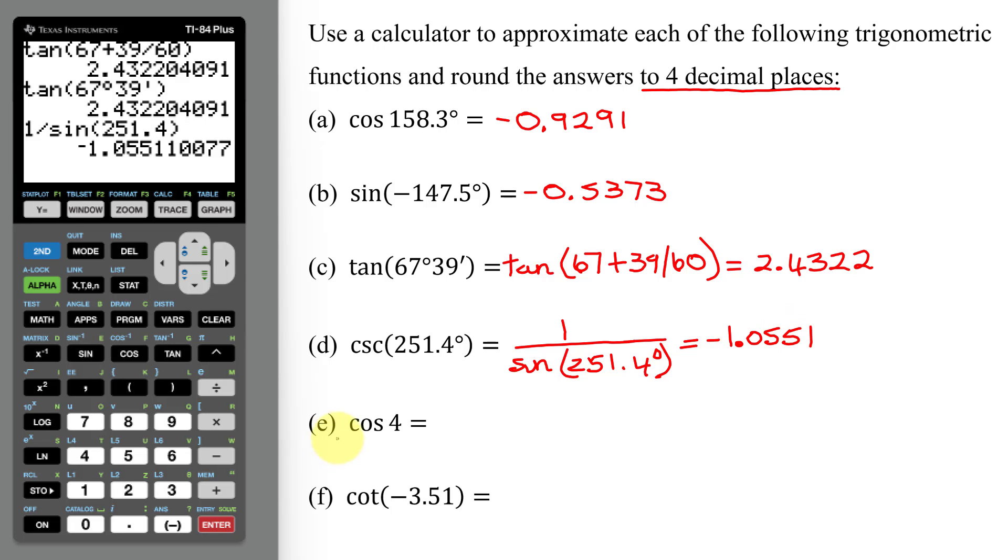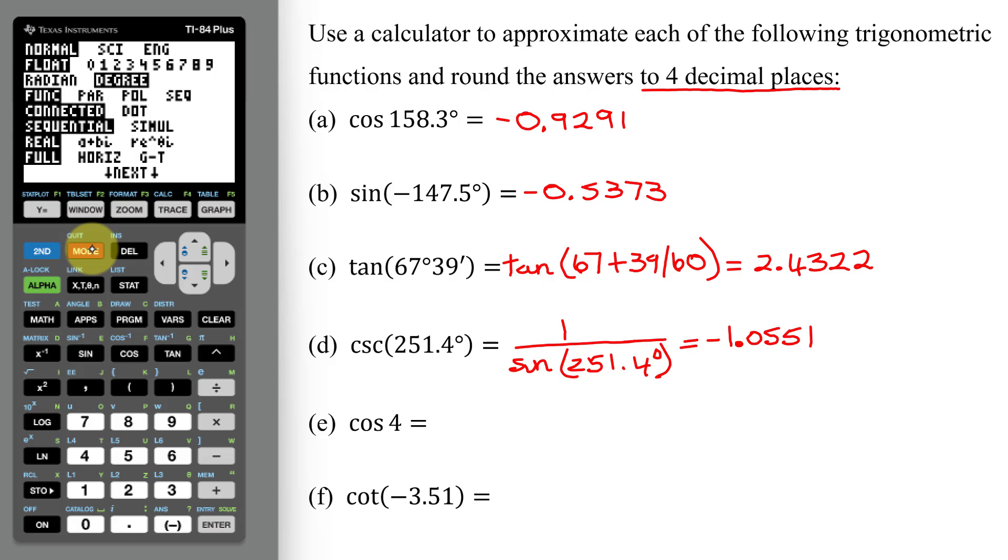Now in part E, be very careful. If you read it quickly, you might think this means find the cosine of 4 degrees. But notice the absence of a degree symbol. This means find the cosine of 4 radians. So my calculator was in degree mode. I need to change the mode. So hit mode. Notice degree is highlighted. I need radians. Scroll down to radians. Hit enter. Radians is now highlighted. So my calculator is in radians.